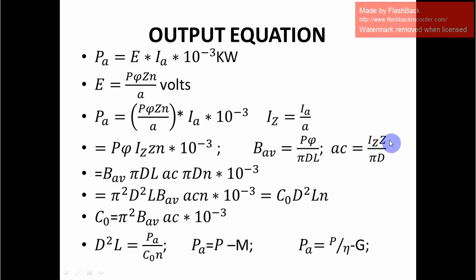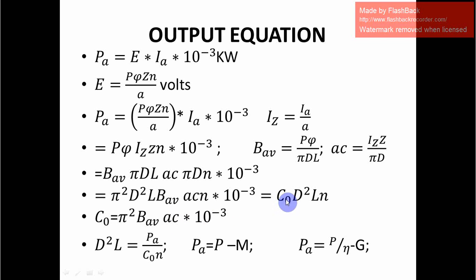After substitution, P·φ equals B_av·π·D·L and I_Z·Z equals AC·π·D. Multiplying these together with n times 10 to the power minus 3 gives π²·D²·L·B_av·AC·n times 10 to the power minus 3. We replace the term π²·B_av·AC times 10 to the power minus 3 with C₀, where C₀ is the output coefficient.